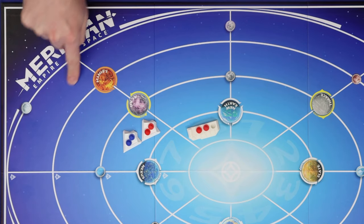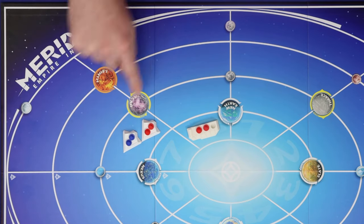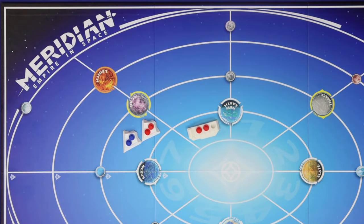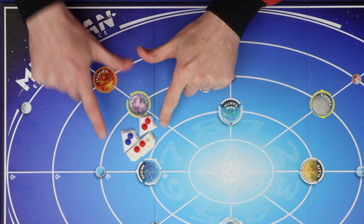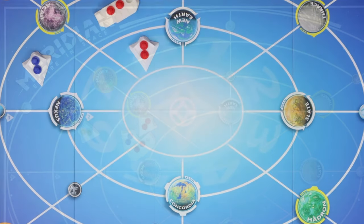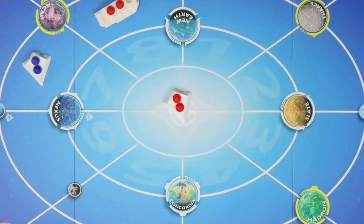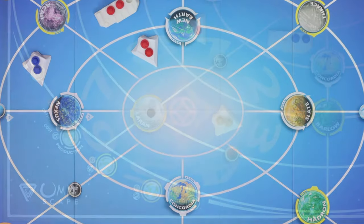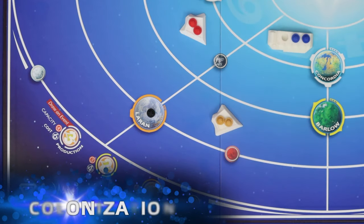But each quadrant does have a maximum capacity shown here: five ships in the outer ring, four for the next ring, three in this ring, and two for the inner ring. You cannot enter or even move through a quadrant if its capacity is full. Ships may also not move into or through the central space on the board, lest they be incinerated by the Meridian sun.